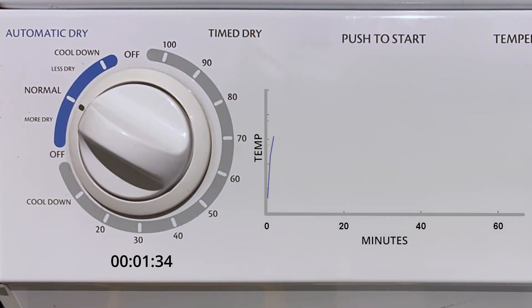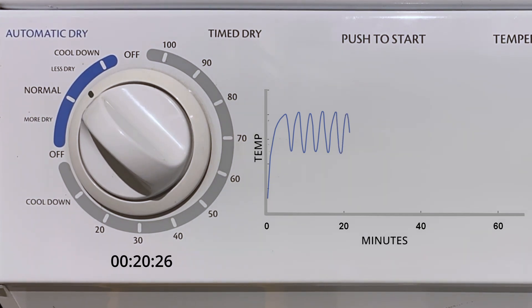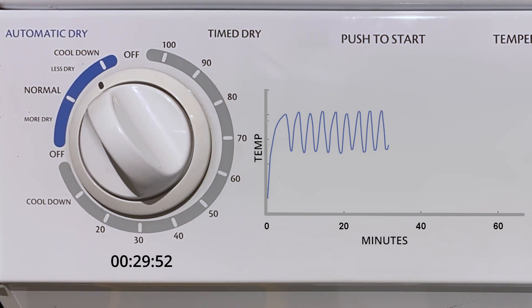So this chart will look basically the same as the previous test in the dumb timed mode, but watch the knob closely. Notice it only turns when the temperature is falling because the heating element is off. This small load heats up quickly so we end up with a lot of on-off cycles allowing the knob to spin fairly frequently.